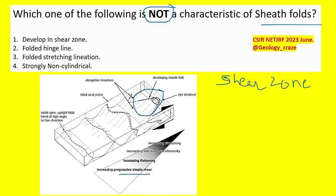If we cut this part we will get an I-like structure called I structure. The shape varies depending upon how much shearing takes place. These are the stages: increasing progressive simple shear and increasing flattening.